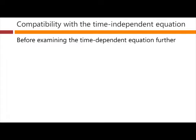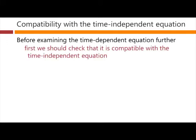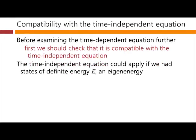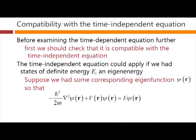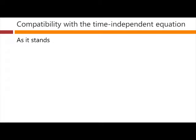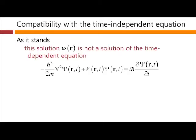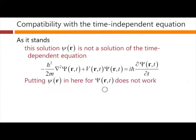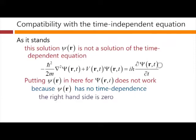Now, is this equation compatible with the time-independent equation? We need to check this before we go any further. The time-independent equation applies if we have states of definite energy E — an eigenenergy — with some corresponding eigenfunction psi of r. As it stands, however, psi of r is not a solution of the time-dependent equation. Putting psi of r in for capital psi of r and t simply does not work, because psi of r has no time dependence — the right-hand side would become zero, whereas it should be E times psi of r.